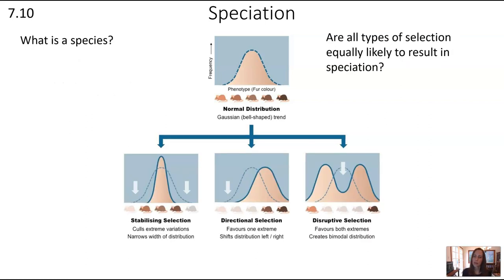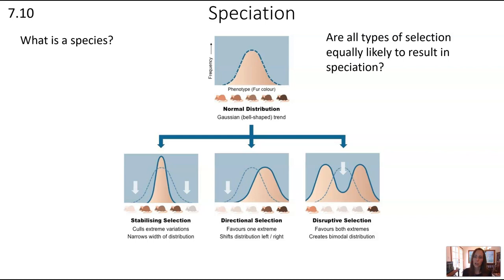There are three different types of selection: stabilizing, directional, and disruptive. In stabilizing selection, the average fur color in the middle is most advantageous; mice with fur that is too light or too dark have lower fitness. Directional selection means light-colored fur has lower fitness, shifting the overall distribution to favor one extreme. Disruptive selection is where the phenotype in the middle has lower fitness, while the lighter coat and darker coat both have higher fitness.